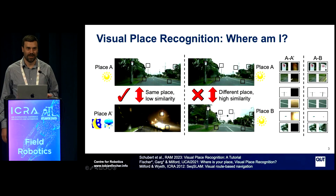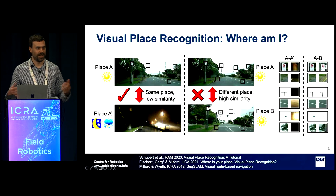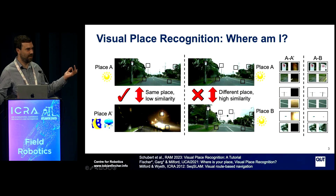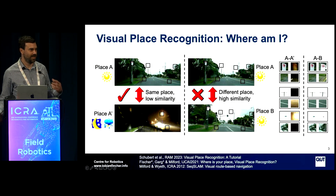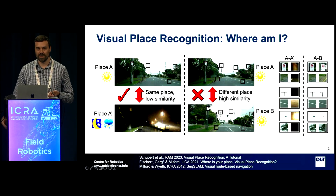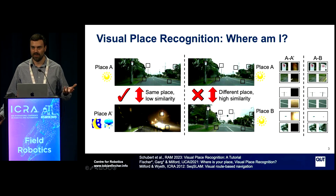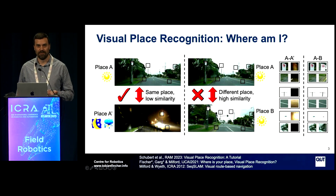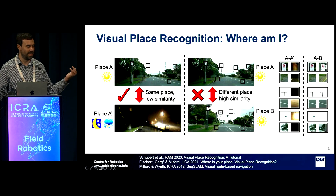Let me talk about visual place recognition for those of you who are not aware of it. The problem statement is that given a large database of images — the map of your environment — and a new incoming query image, you want to recognize where you are. You want to find the mapped image in the database most similar to the query image. However, it's a non-trivial task: there are images of the same place that look very dissimilar because the environment has changed, and there are similarly-looking places that are geographically very different.